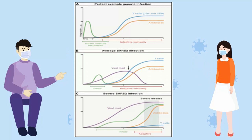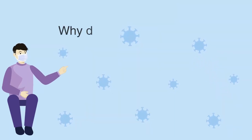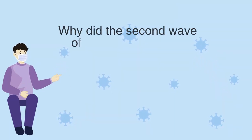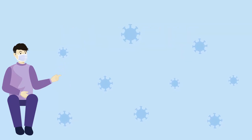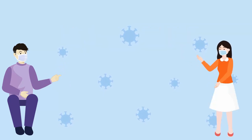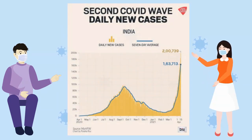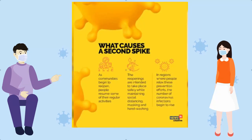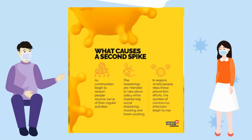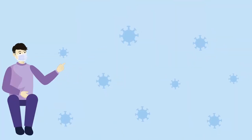Can you explain why the second wave of COVID-19 happened in India all of a sudden? The second wave hit India more drastically compared to the first wave because there was a laxity in COVID-appropriate behavior, contact tracing, and containment guidelines.